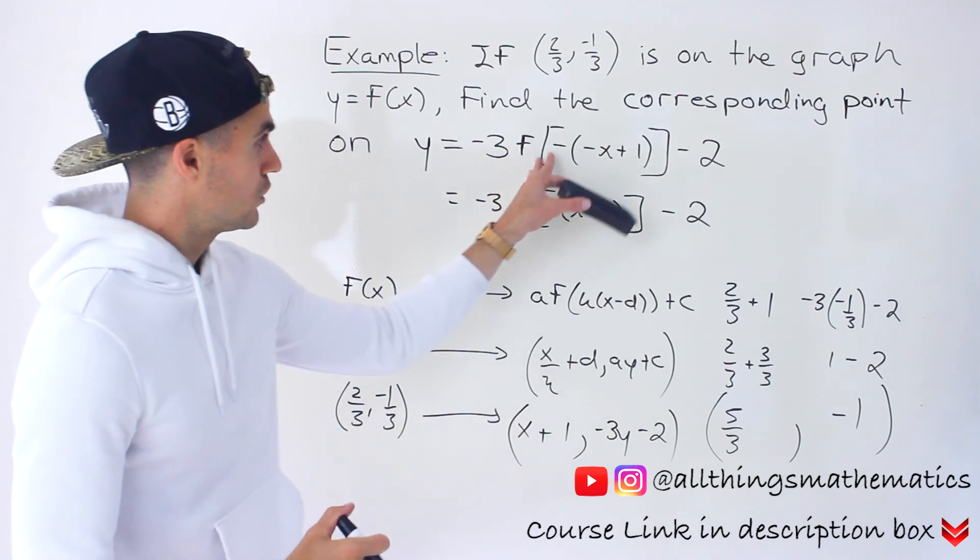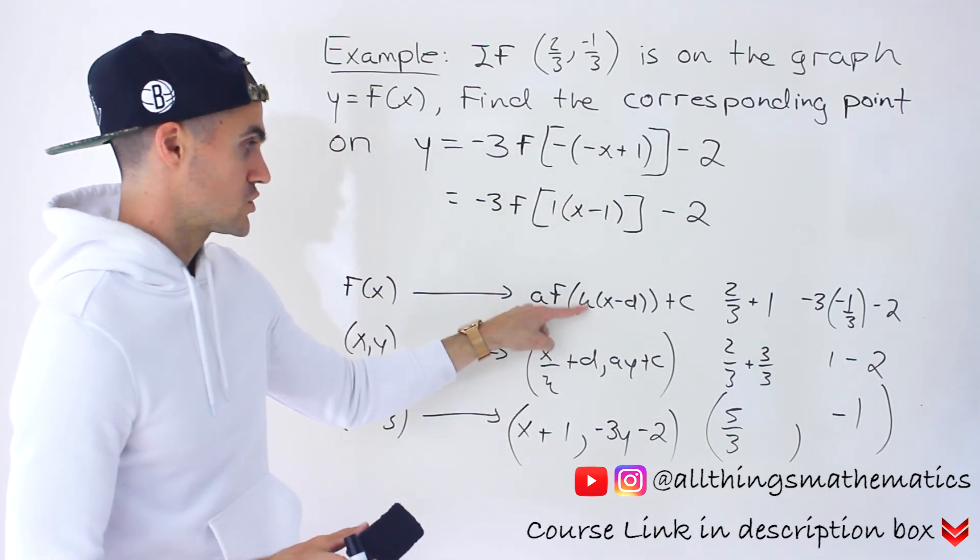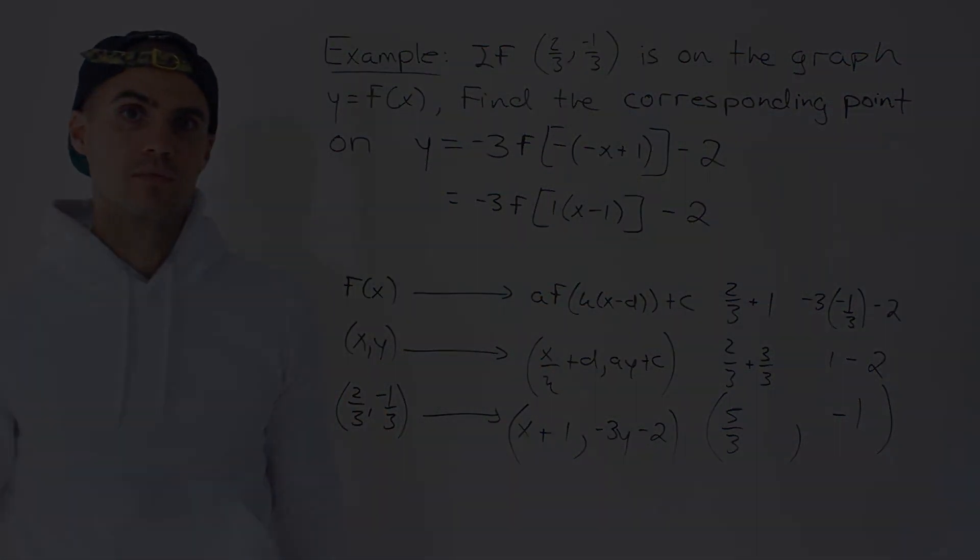And so the final transformed coordinate would be 5 over 3 and negative 1. Right? So just be careful. Look at these formats, especially within these brackets, make sure it's in that k bracket x minus d format.